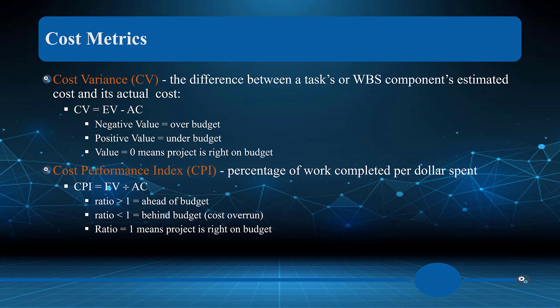Let's continue with part three of our cost metrics. We'll start by looking at cost variance, which is the difference between a task or work breakdown structure component's estimated cost and its actual cost. The earned value was six thousand and our actual cost was eight thousand — those are the numbers we're going to use. Remember, this isn't for the whole project; it's for a point in time.